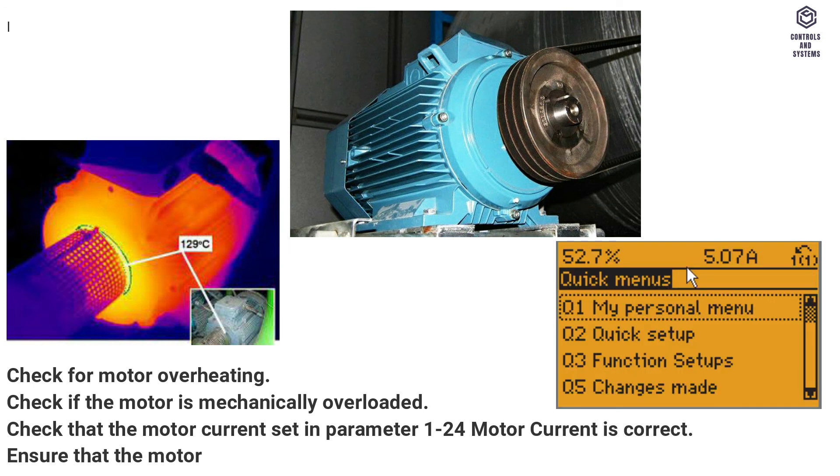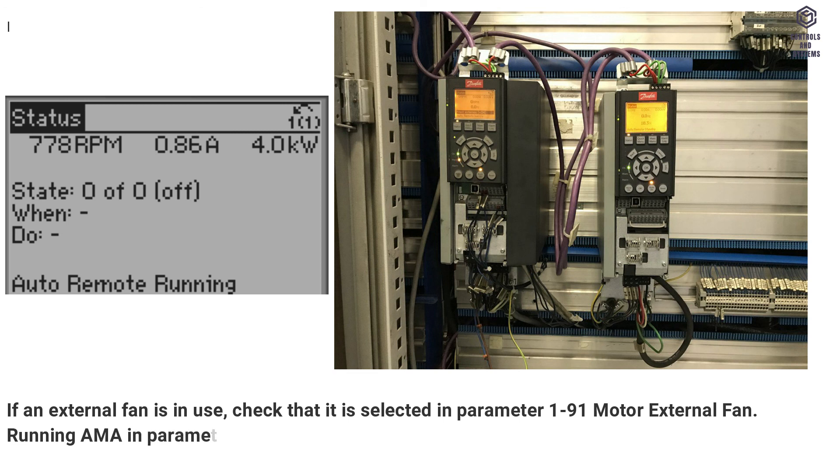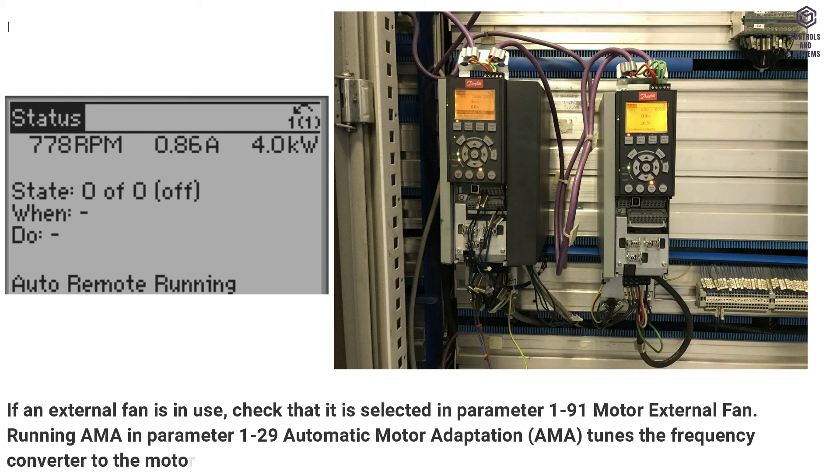Ensure that the motor data in parameters 120 to 125 is set correctly. If an external fan is in use, check that it is selected in parameter 191 motor external fan. Running AMA in parameter 129 automatic motor adaptation, AMA, tunes the frequency converter to the motor more accurately and reduces thermal loading.